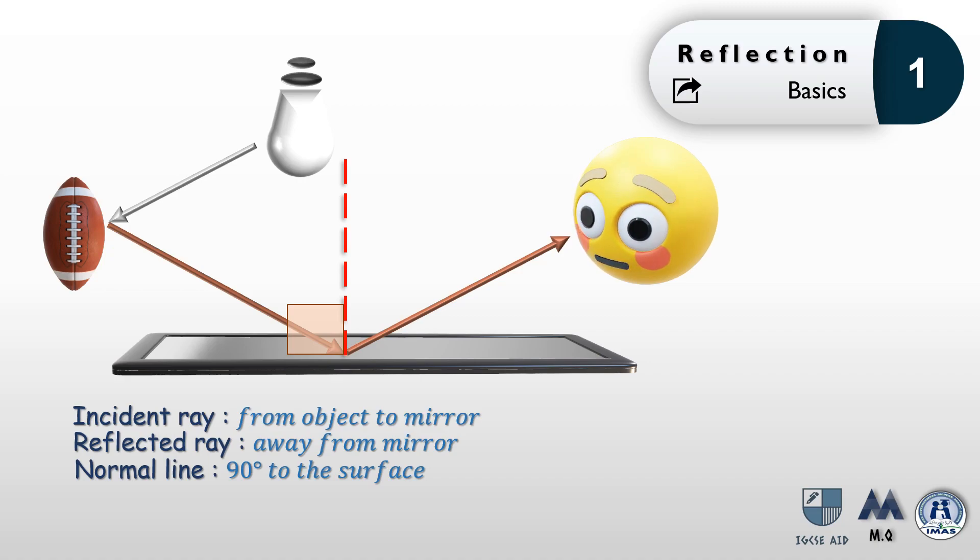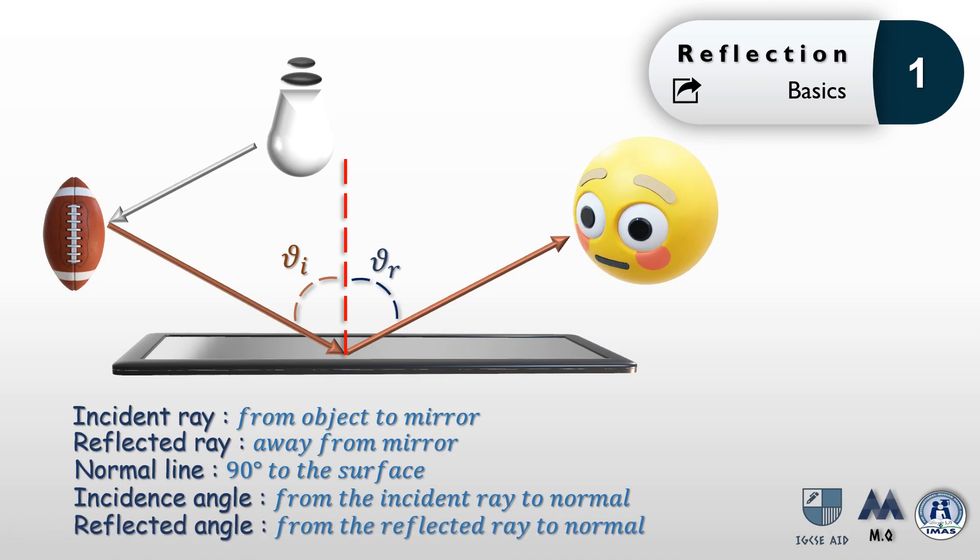This line is used to measure the angles involved in the process of reflection, such as the incident angle, which is the angle from the incident ray to the normal line, and the angle of reflection, which is measured from the normal line to the reflected ray. The first law of reflection says that those two angles are equal.